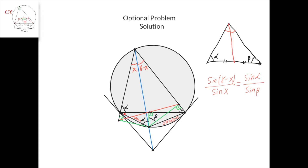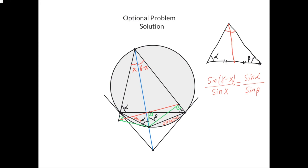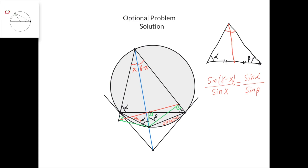From the law of sines, this length is 2r times sin of x, and this length is 2r times sin of (gamma minus x), where r is the radius of the circle. This point and this point lie on the circle with diameter this segment, because of the 90-degree angles here and here. Similarly, this point and this point lie on the circle with diameter this segment, because of the 90-degree angles here and here. Therefore, the diameter of the circle around these four points is 2r sin(gamma minus x), and the diameter of the other circle is 2r sin x.